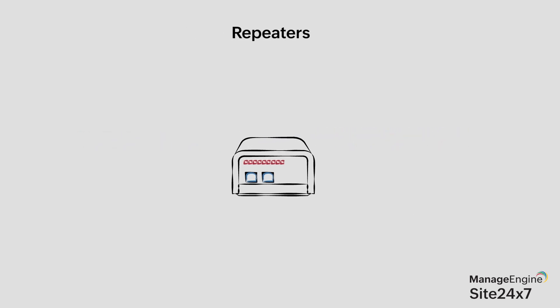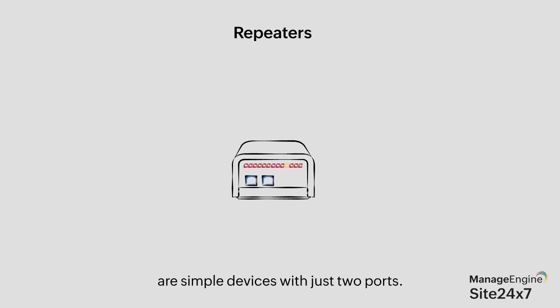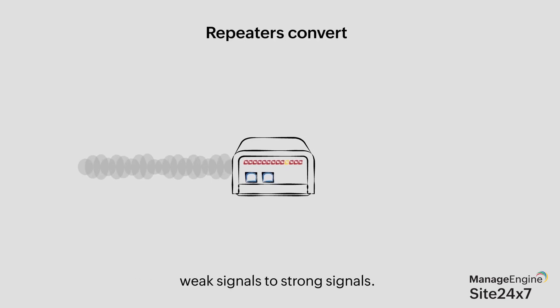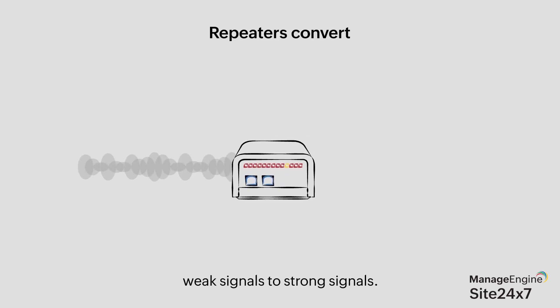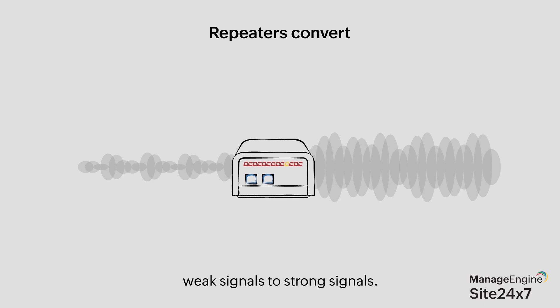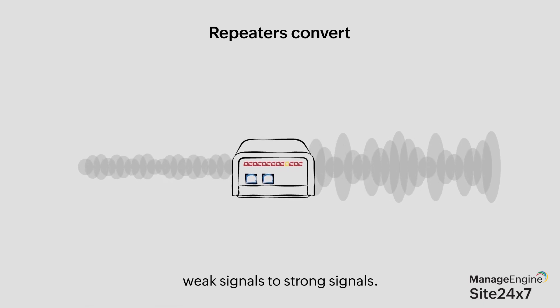Next we will see about repeaters. One of the simplest network devices with just two ports, it strengthens an incoming signal received in one port and sends the data to the destination from the other one.